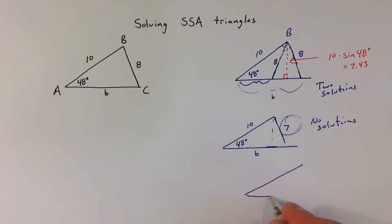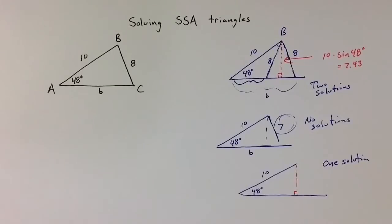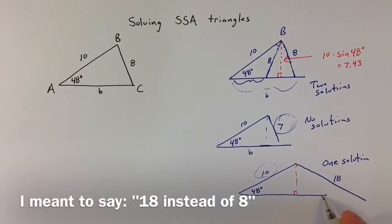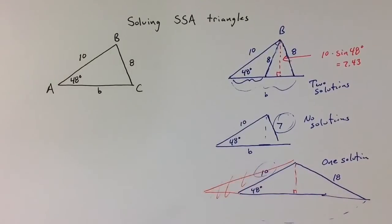And to think about the third possibility, we could get one solution if this other side is exactly 7.43. Given our arrangement with 10 as the other given side and 48 degrees, we could get sort of a perfect right triangle and then there would only be one solution. Or probably more often what's going to happen is if the side that's opposite that angle is longer, let's say that was 18 instead of 10, then the side length 18, if I tried to swing it to the other side, it would end up over here and that's not going to give me a second solution.